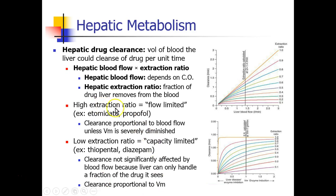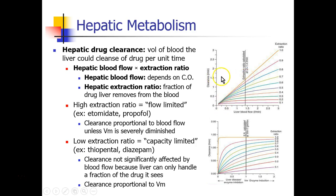Drugs with a high extraction ratio might be etomidate or propofol. We call these flow-limited because the clearance of drug is proportional to blood flow. Looking at the graphs, a drug with a very high extraction ratio has almost 100% of the drug extracted from the blood as it passes through the liver. As blood flow increases, the liver metabolizes more drug because it's taking nearly 100% of the drug out with each pass. So we call this flow-limited: clearance is really proportional to blood flow.